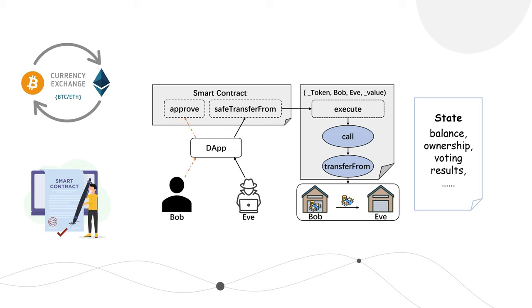In the world of decentralized exchanges, DEXs, smart contracts are the backbone of operations. However, they can often contain State Derailment Defects, leading to unauthorized or incorrect changes to the system state during contract execution. These defects pose severe security threats and are challenging to detect due to the complex state logic of DEX projects.